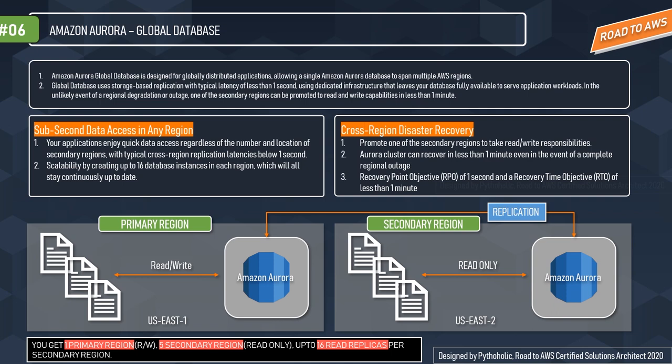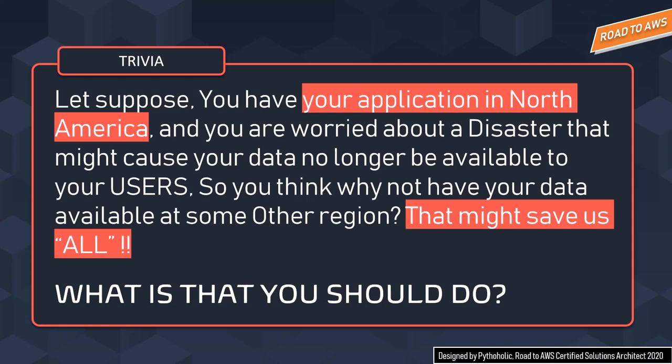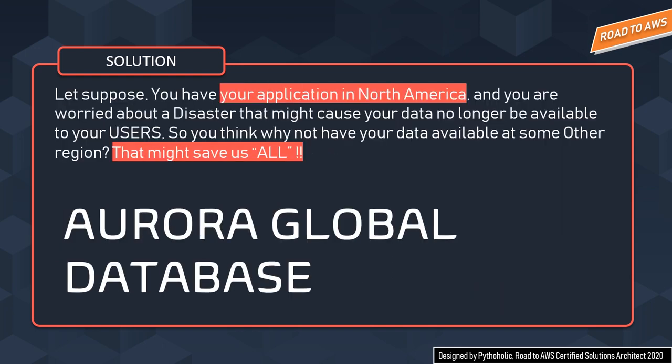This was a lot of information. Do you remember the question from the beginning of the session? If you have your application in North America and are worried about a disaster making your data unavailable, and you want your data available in another region — the answer is AWS Aurora Global Database. Aurora's global database replicates your data with no impact on database performance, enables fast local reads with low latency in each region, and provides disaster recovery from region-wide outages.